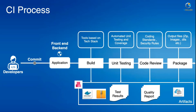Once unit test cases are all passed, there are processes where the code can be reviewed. Code quality, naming conventions, and standard coding standards are validated automatically using various tools and frameworks. A report is then generated showing how the new code performs with respect to code quality.